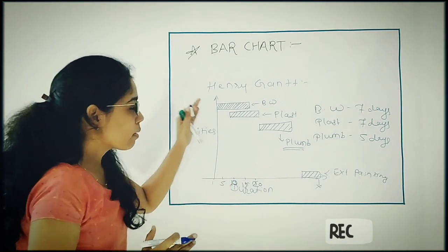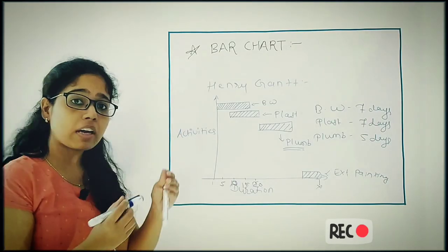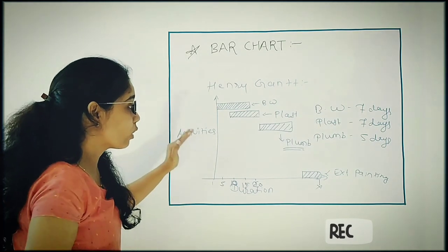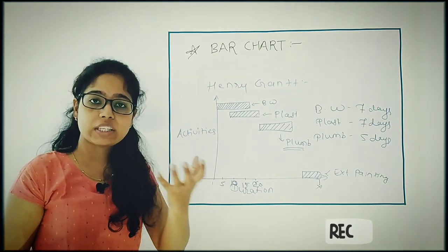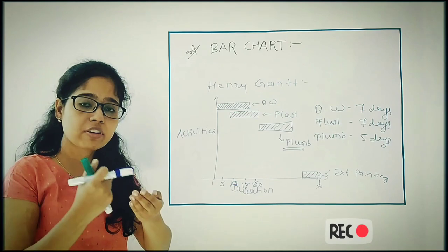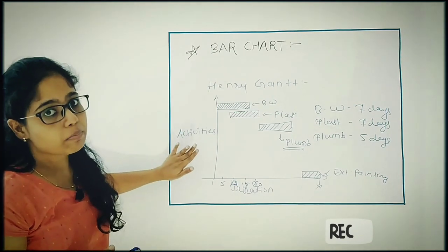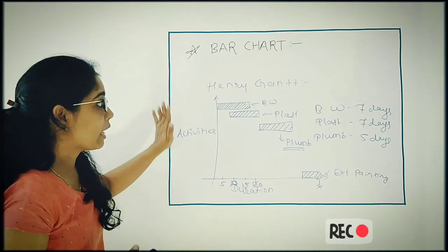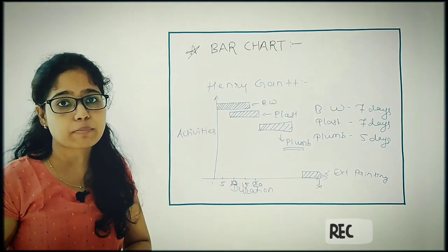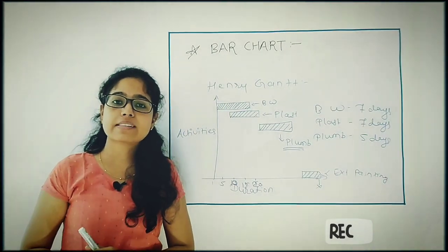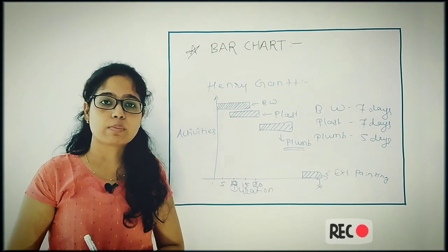This is the simple bar chart given by Henry Gantt where this method is only implemented when the project is small. If the project has fewer activities or small duration, only there we can implement this method given by Henry Gantt, that is also called a bar chart.